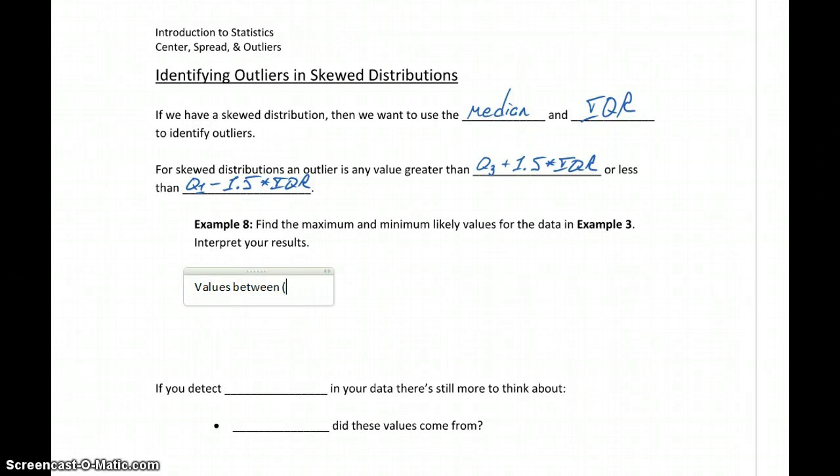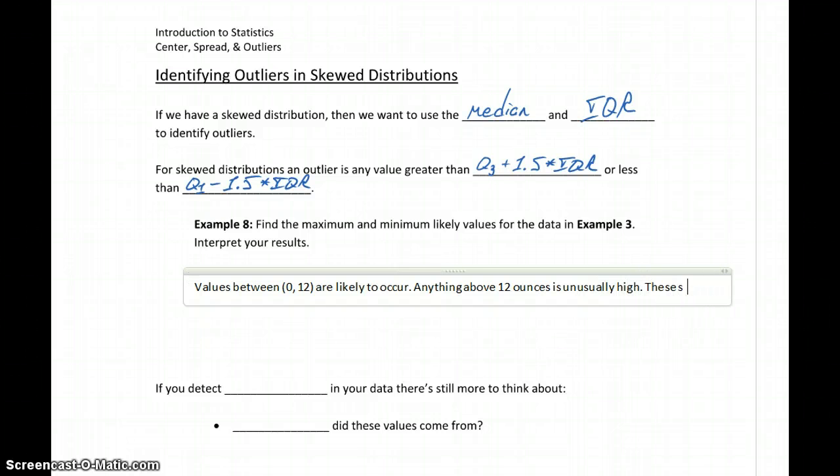So values between negative 4 and 12, or again since in this case practically there aren't going to be any negative values, we can say 0 to 12, are likely to occur. Anything above 12, so any states that allow a possession limit above 12 ounces would be considered unusually high. These states in this case are outliers. Any states that allow more than 12 ounces would be considered to be outlier states, allowing unusually high limits of medical marijuana.